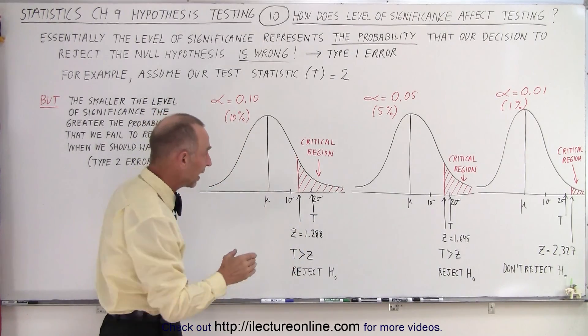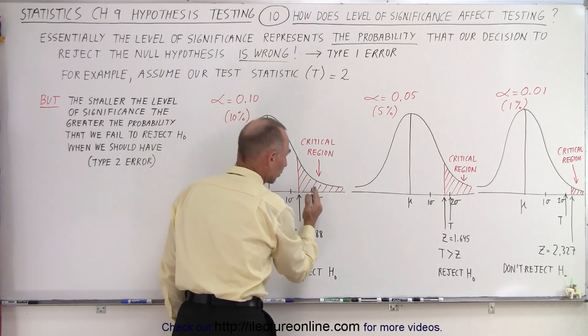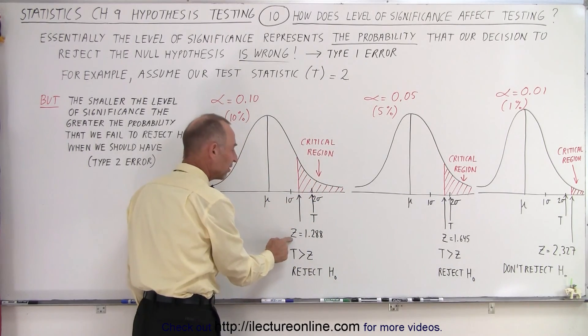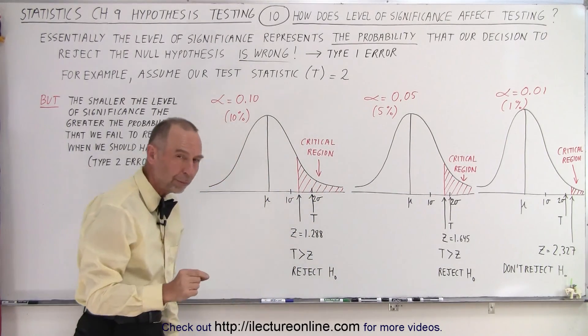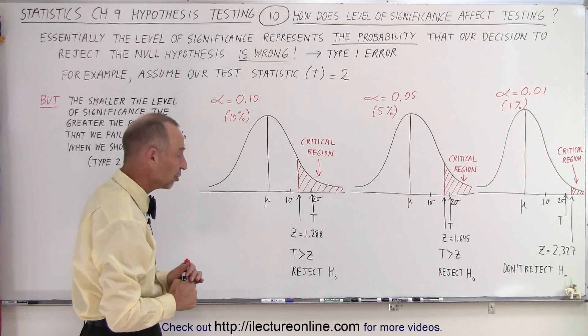Notice that as the level of significance decreases, the boundary where the critical region moves further and further to the right, which means that our z-score will be a greater number, the z-score for that initial point on the critical region.